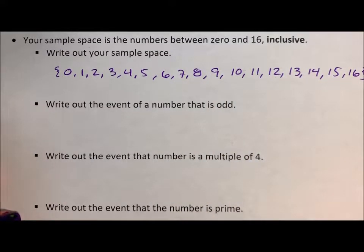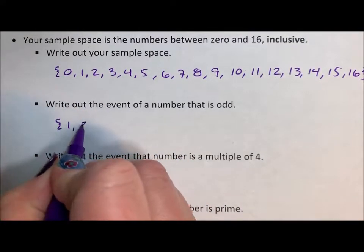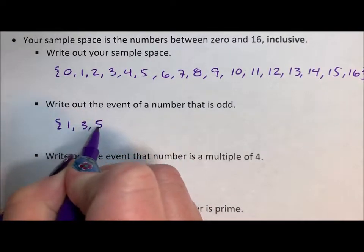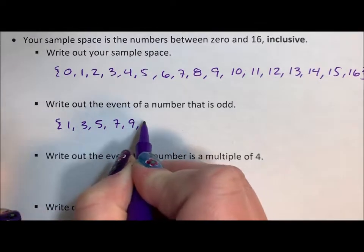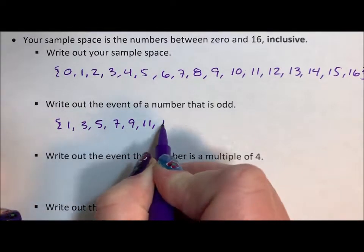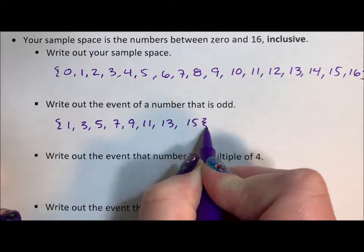Write out the event that the number is odd: {1, 3, 5, 7, 9, 11, 13, 15}.